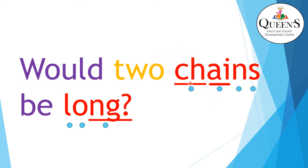And now there's a blending word. These two sounds come together and make the sound: ch. Ch. And again there's a digraph — two sounds come together and make the sound: a. Smile and say a. S, ch, a, n, s — ch, ains, chains. Would, two, chains. This is the tricky word: be. And the blending word — o, n, n, l — ong, long. Would two chains be long? Once more — would two chains be long? Very good. Would two chains be long?